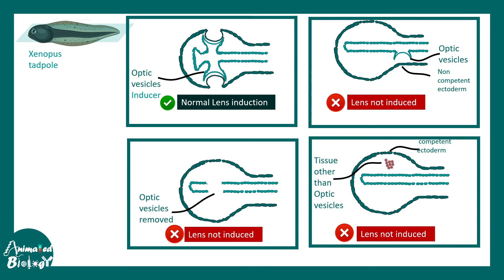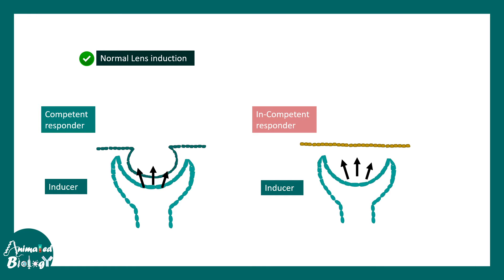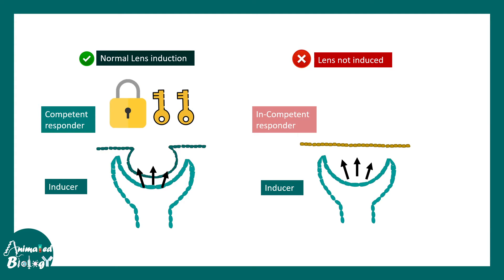If the optic vesicle is present underlying a non-competent ectoderm that lacks the capability to follow its instructions, the lens is never induced. Similarly, placing a random tissue other than the optic vesicle underneath a competent ectoderm does not produce a lens. This tells us that the right inducer and the right competent responder have to interact simultaneously — like a two-key lock. With only one key, the lock will never open.